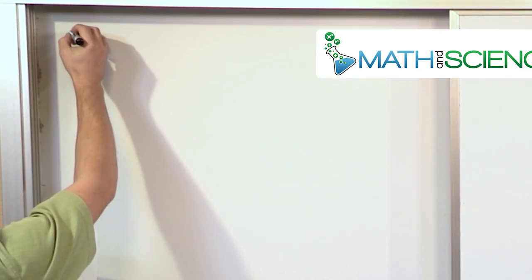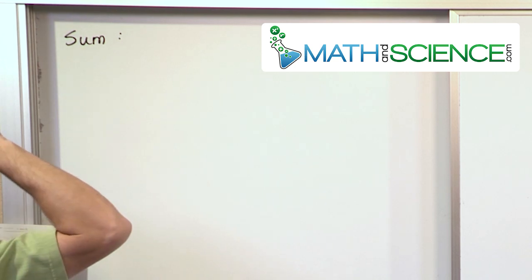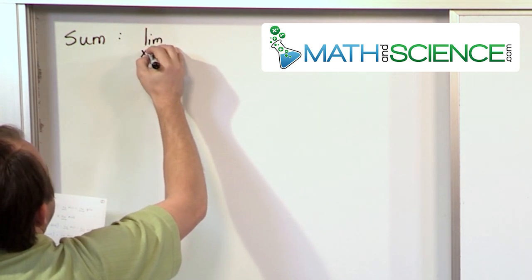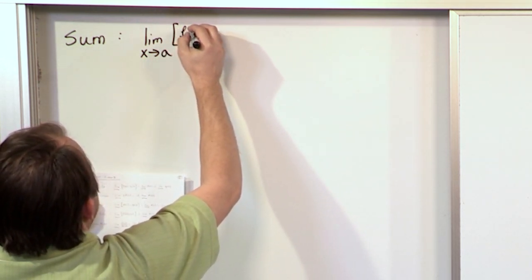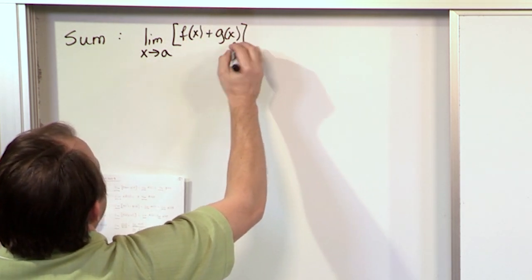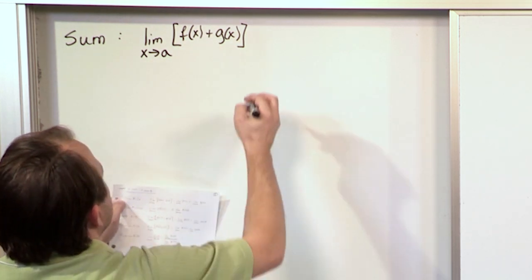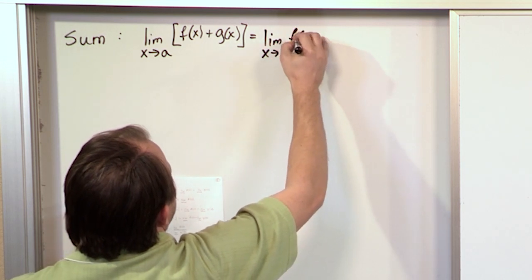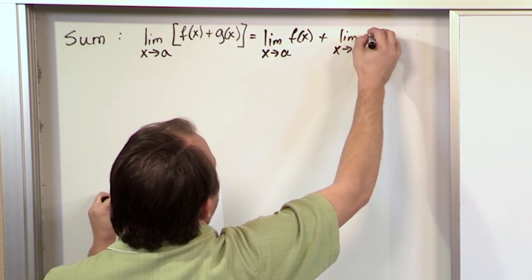The first one is called the sum rule, and it's something that you have certainly seen before. What that means is if you have the limit as x approaches a of two functions, one of them is called f of x and the other one is g of x, and they're added together — so you're taking the limit of the sum of two functions — that's the same thing as the limit as x approaches a of f of x plus the limit as x approaches a of g of x.